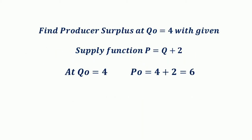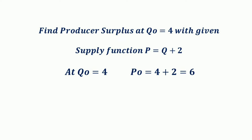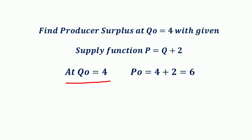Let us consider a numerical example. We want to find out the producer surplus at Q0 = 4, meaning the equilibrium quantity is 4, given the supply function P = Q + 2. To find the producer surplus, we first need the equilibrium price. Substituting Q0 = 4 into the supply function gives 4 + 2 = 6. So the equilibrium price P0 = 6.